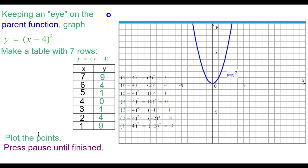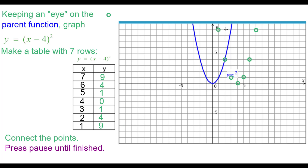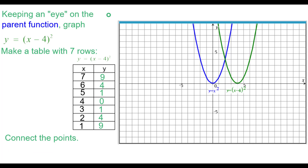Go ahead and plot the points, then connect them. Connecting the points, you can see we get the graph of y equals the quantity of x minus 4, squared.